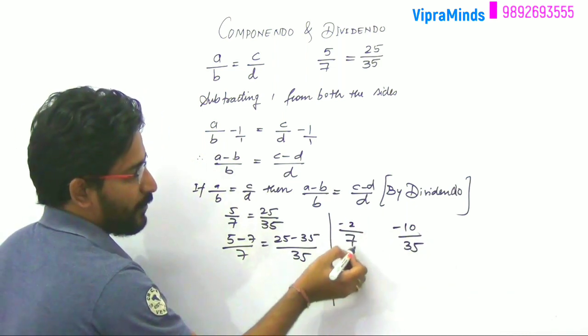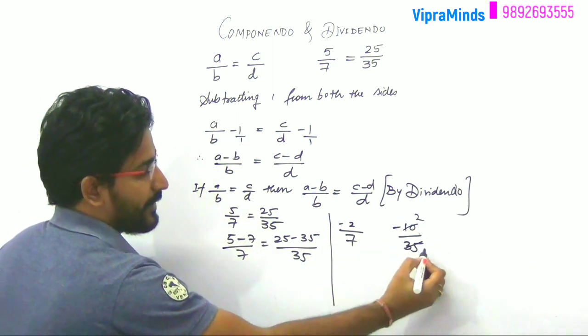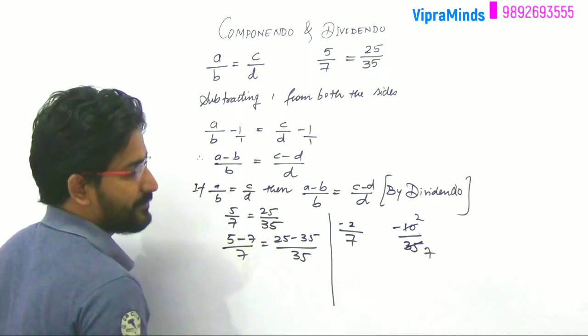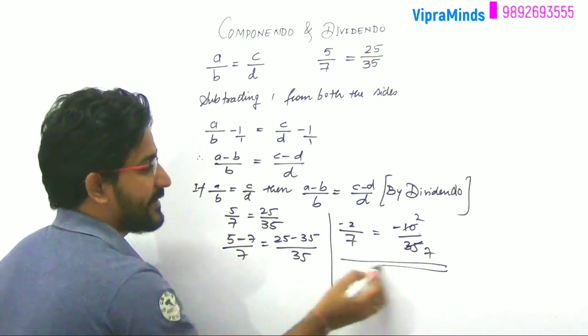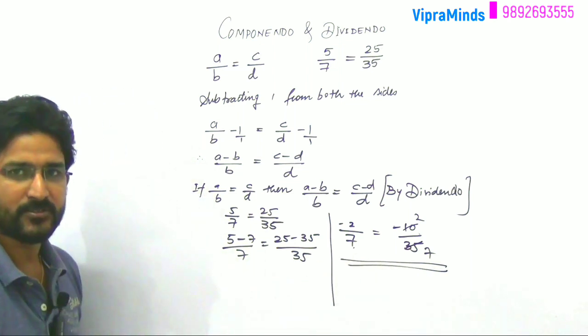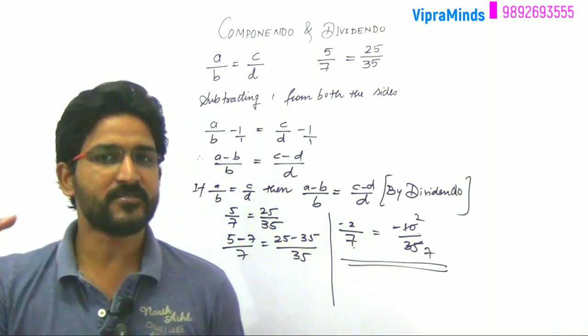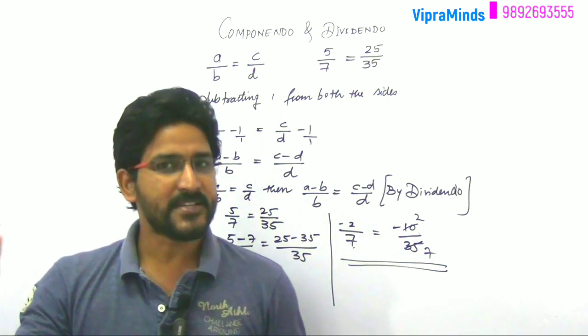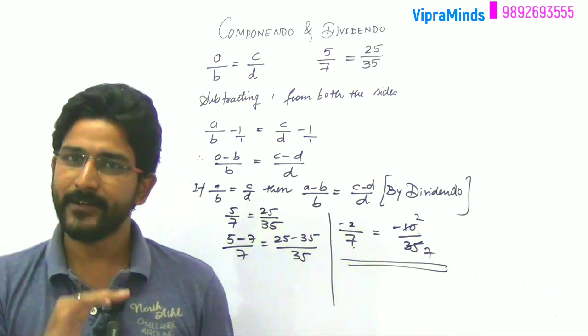अगर हम इसमें देखते हैं, यहां 5 into 2 is 10 and 5 into 7 is 35. So you'll get minus 2 by 7. The ratio remains the same on both sides. This is known as Dividendo property. If a by b equals c by d, then a minus b by b equals c minus d by d. This is Dividendo property.